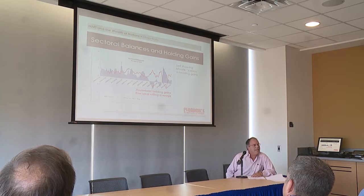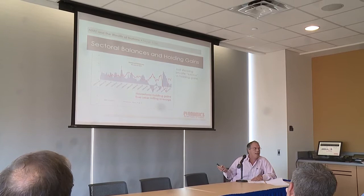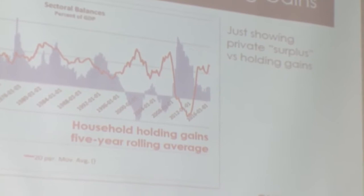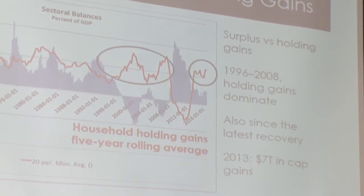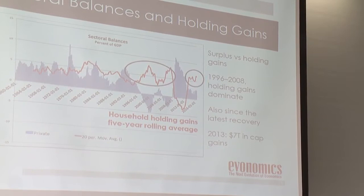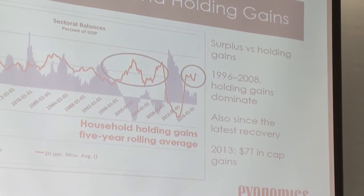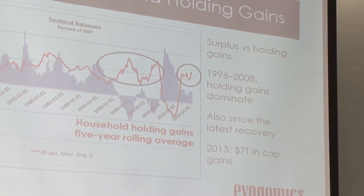Take 2013 as an example: household net worth and assets went up by $10 trillion that year. Of that increase, $7 trillion was holding gains. And especially since the big sea change that seems to have occurred in the 1990s, holding gains have really dominated over sectoral flows.